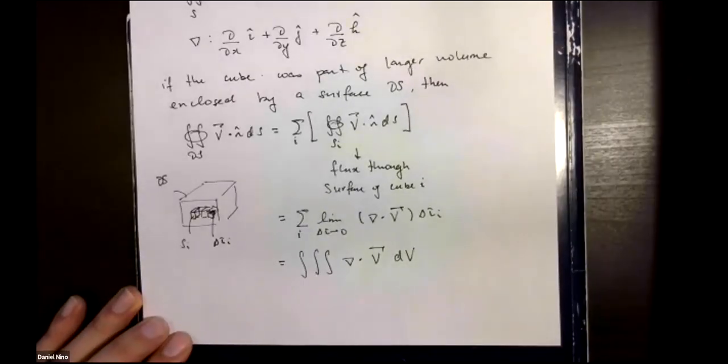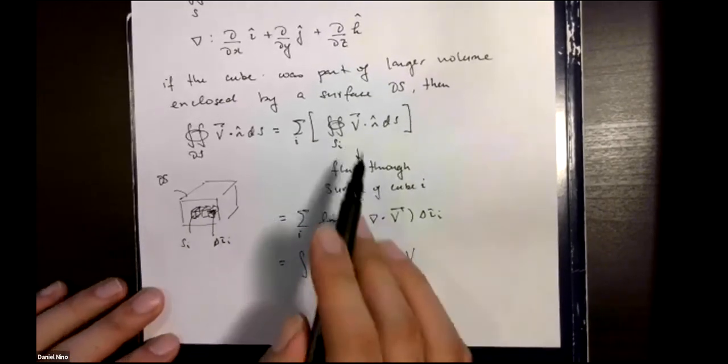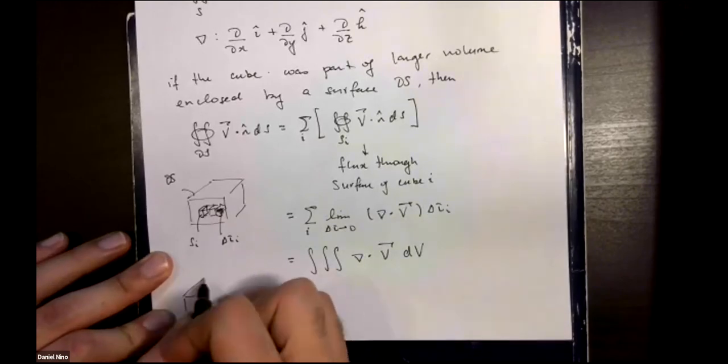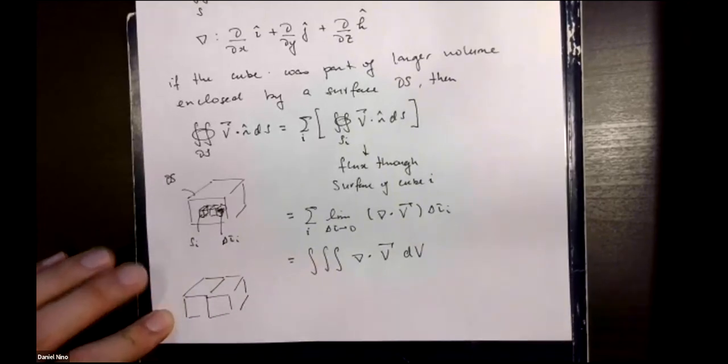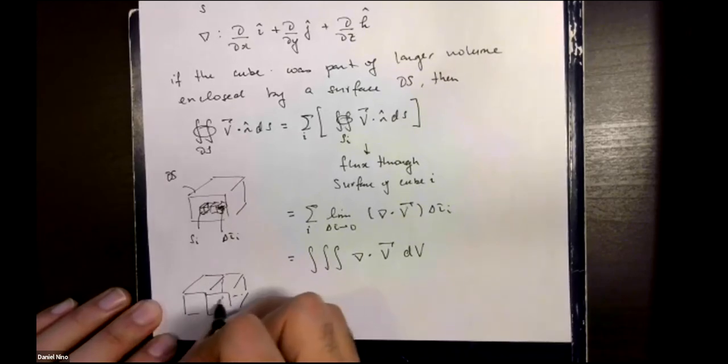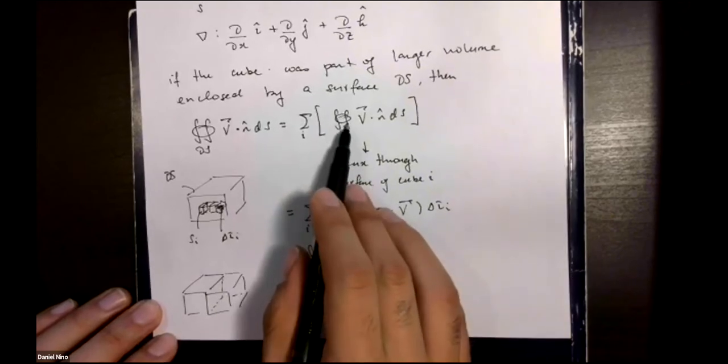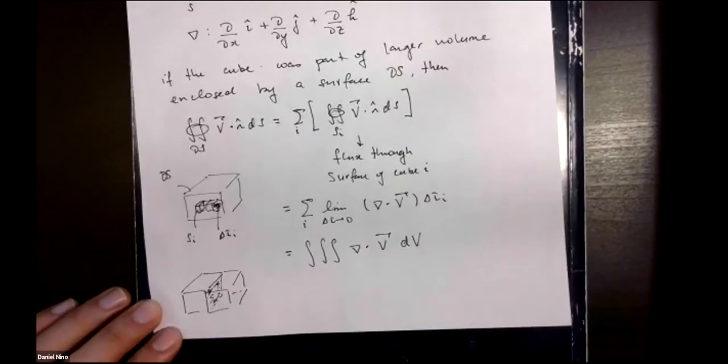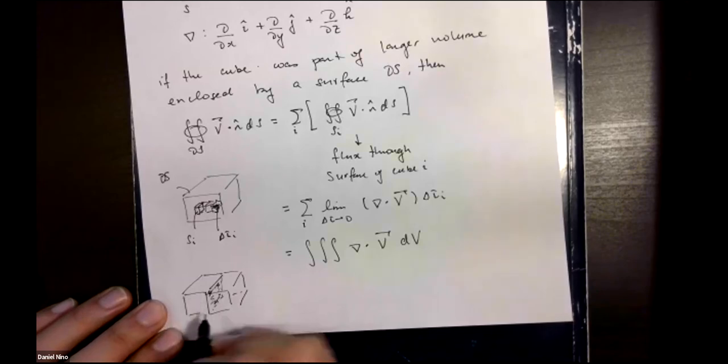Now there's one small technicality that we skipped, and that is when we do the surface integral, you have to take care to consider common surfaces to each one of these. If this is two of these small cubes stacked together, then when we calculate all of the surface integrals, the face that's joining them seems to be repeated.